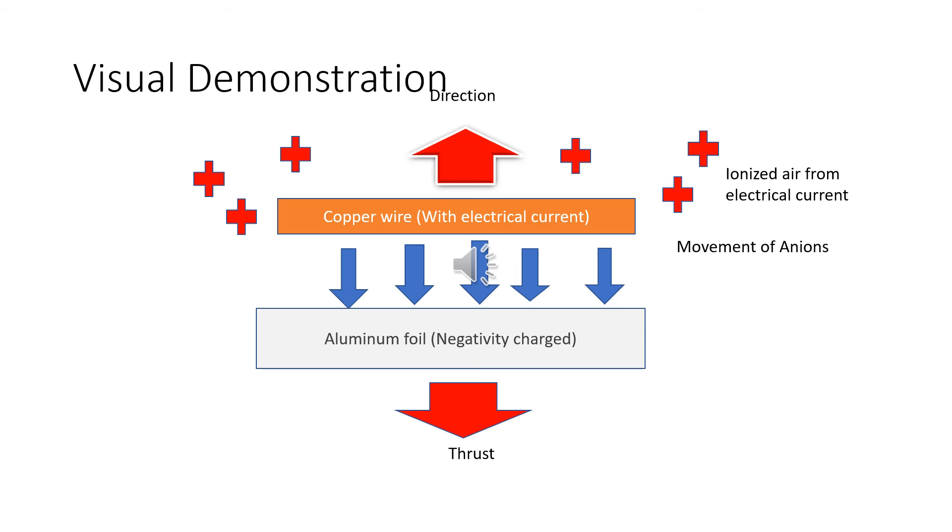This shows the visual demonstration. You see the copper wire with electric current ionizes air, which causes it to be positively charged. And the positively charged ions flow to the aluminum charge, which the aluminum atoms disposes of their electrons to the ions. And as a result, it'll create thrust, which causes the craft to go up. This is just a visual representation of what it looks like.